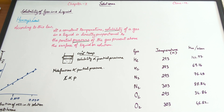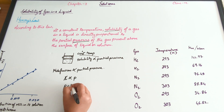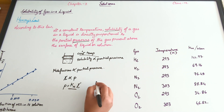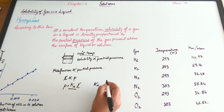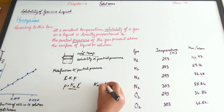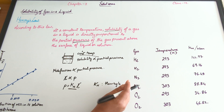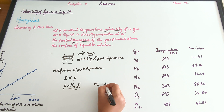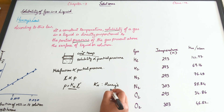From that relationship, we get P = KH · X, where KH is Henry's law constant.